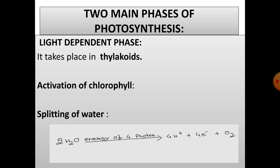You already know about thylakoids. The thylakoids contain chlorophyll. The pigment chlorophyll is contained in the wall of thylakoids. As this pigment chlorophyll is present within the thylakoids, the light dependent phase takes place there.